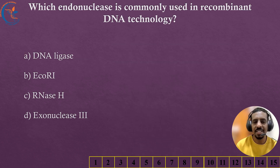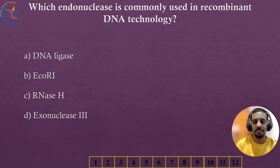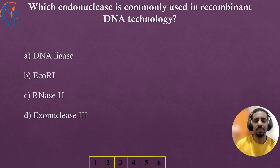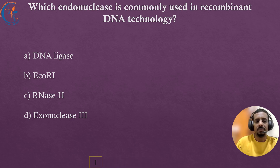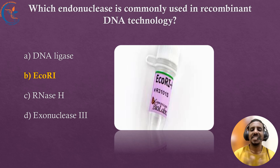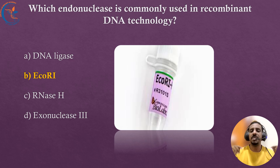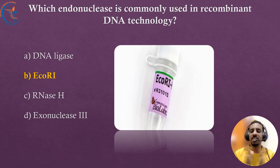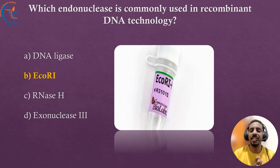Which endonuclease is commonly used in recombinant DNA technology? The correct answer is EcoRI. EcoRI is a restriction endonuclease that recognizes the specific nucleotide sequence GAATTC, as seen in the image. This recognition determines where EcoRI will cut the DNA molecule.